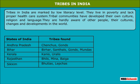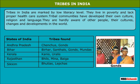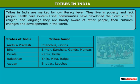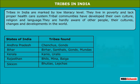Tribes in India: They have low levels of literacy and health and live in poverty. Tribes are hardly aware of other people, their cultures, changes and developments in the world. Some tribes of India are Gaunds of Andhra Pradesh, Mundas of Bihar and Bhils of Rajasthan.